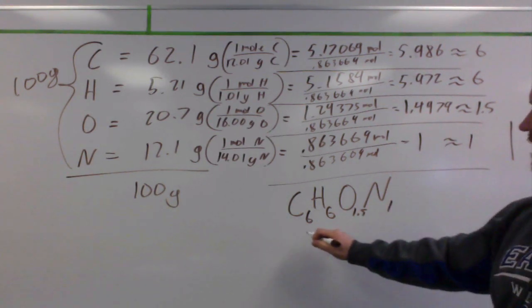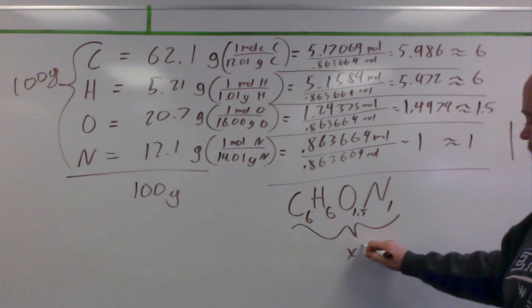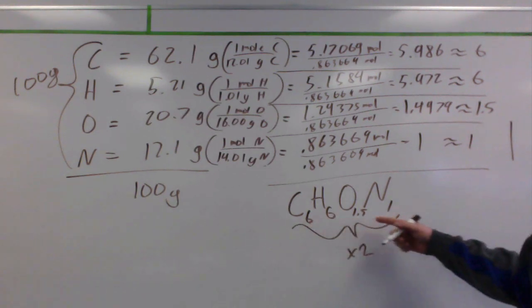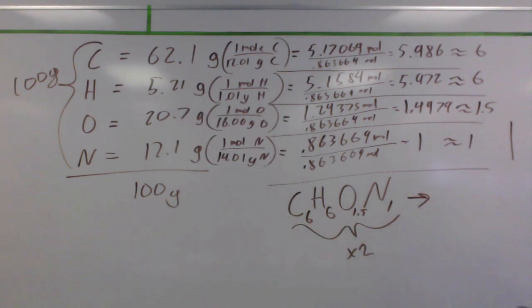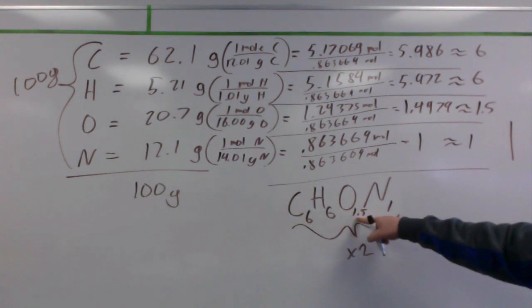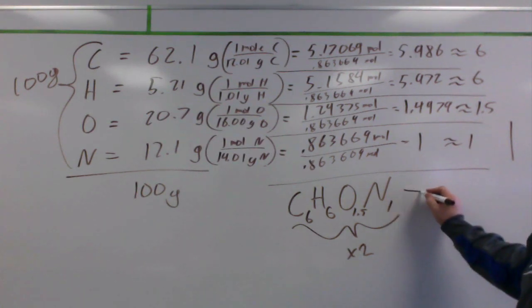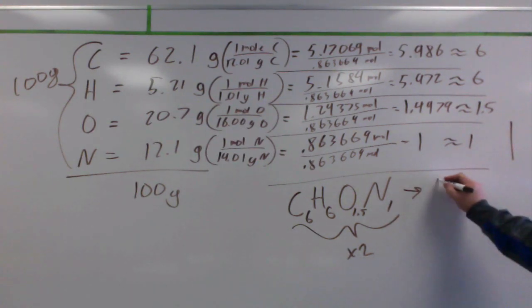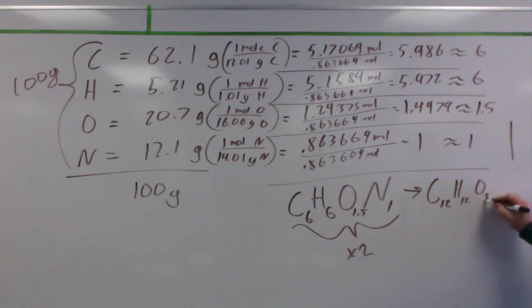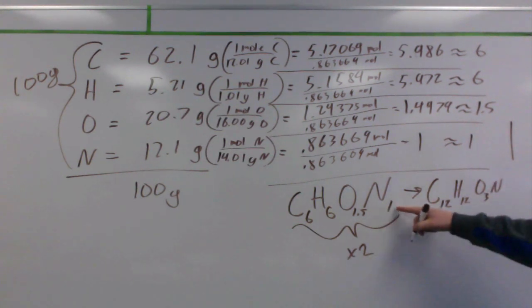But what I can do is take all these values, take them times 2, to make them all whole numbers. So, if I do that, the 6 becomes a 12, that becomes a 12, this becomes a 3, and that becomes a 2. So, then my true empirical formula here is C₁₂H₁₂O₃N₂.